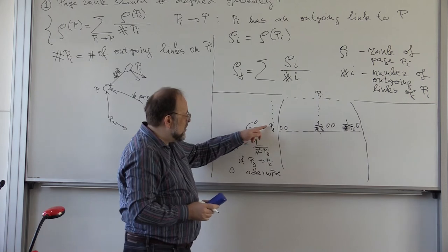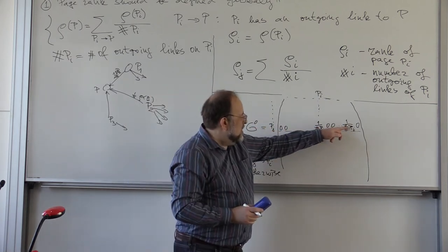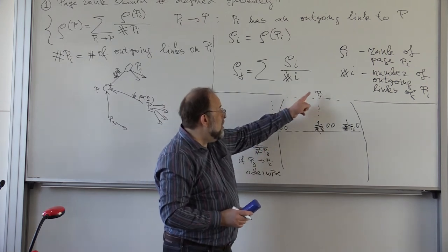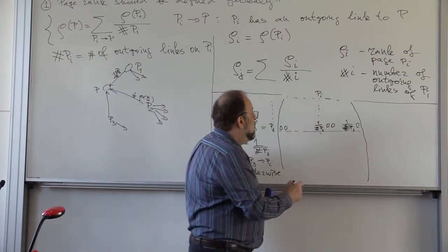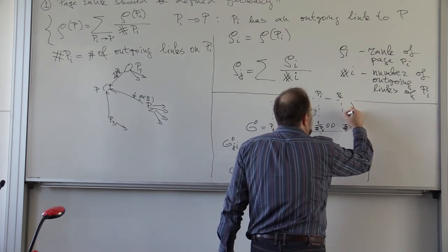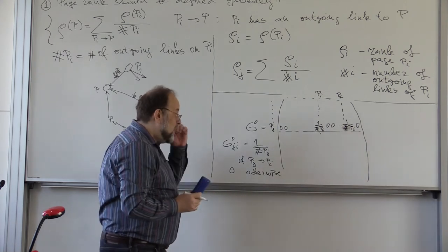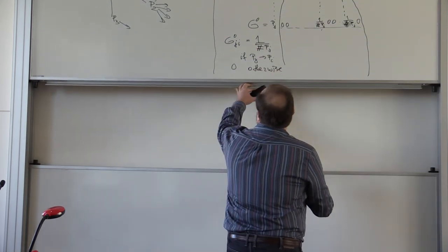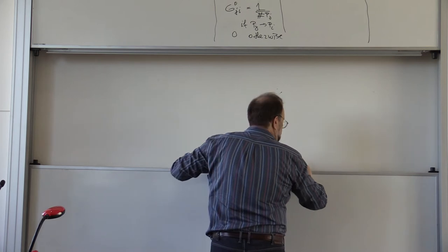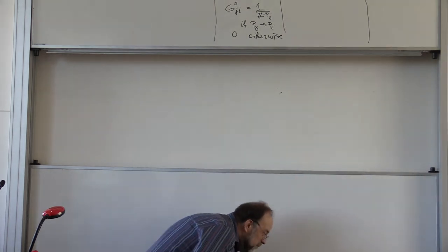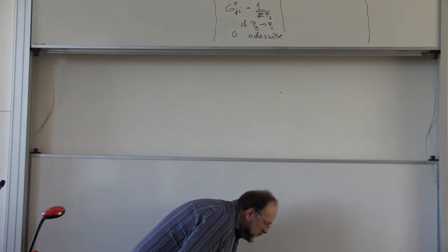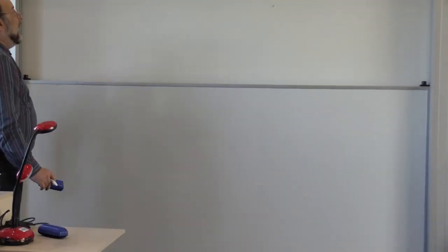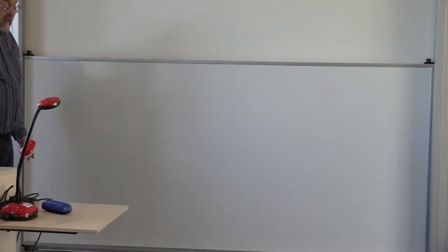So, in this row that corresponds to web page pj, you have zeros everywhere, except for pages so that pj has an outgoing link. So, this is pi, here is pk. So, for example, if there are only two of them.